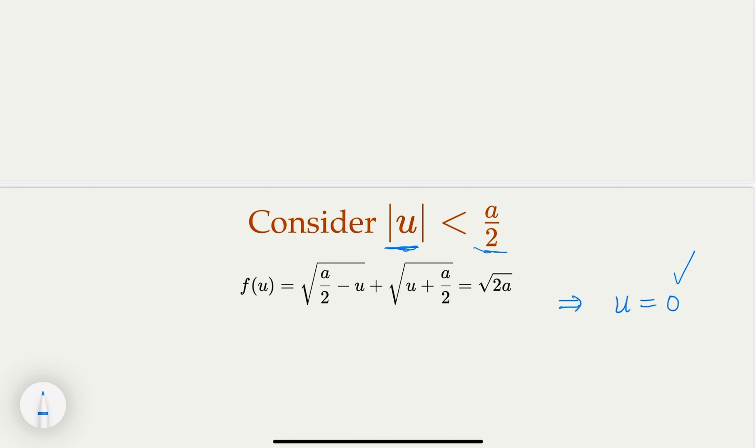Alright. So why that is the case? We can leave this as exercise. The hint is that you can use AM and GM inequality to argue that this is only possible when u equal to 0. Okay.